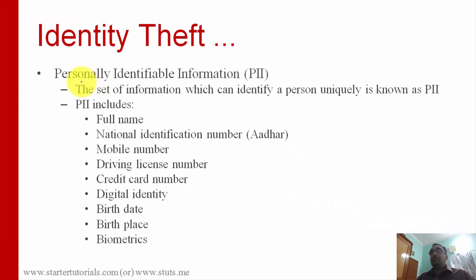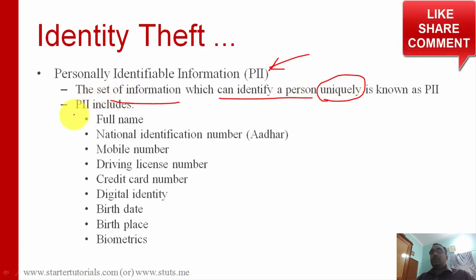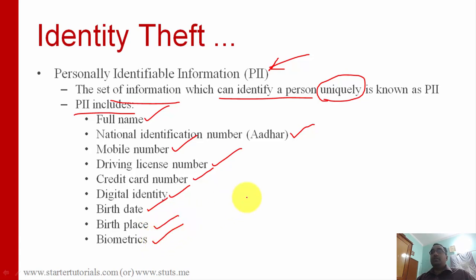One more important concept is PII — Personally Identifiable Information. The attacker or hacker gets this PII through phishing and other social engineering techniques. PII is a set of information which can uniquely identify a person. PII includes the full name of the person, a national identification number (such as Aadhaar in India or Social Security Number in the US), mobile number, driving license number, credit card number, digital identity, birthdate, birthplace, and biometrics.